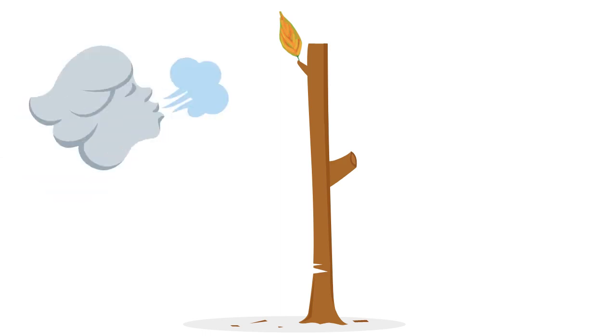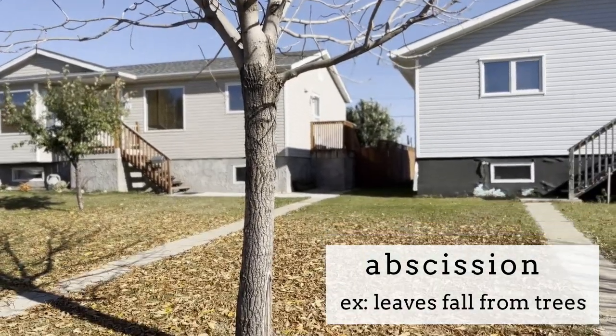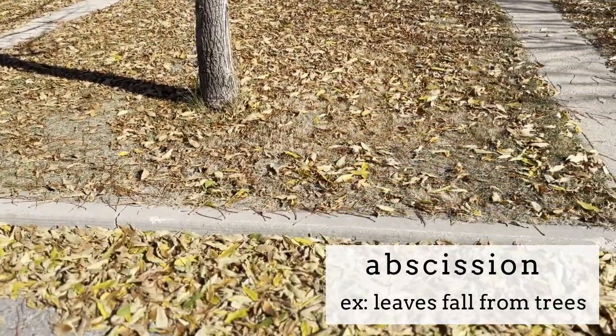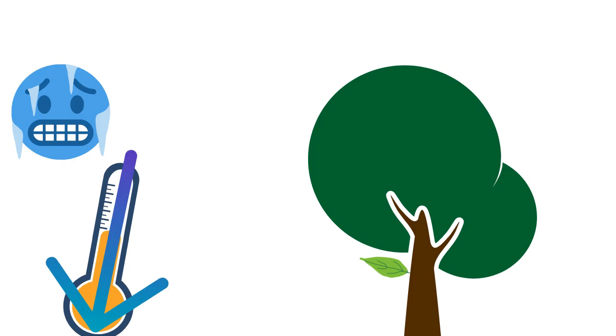Abscission is the process in which plants shed their organs. For example, in autumn, leaves fall from deciduous trees. This begins when a drop in temperature or reduction of sunlight...